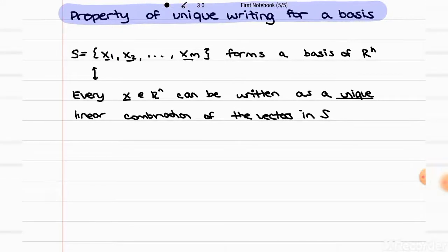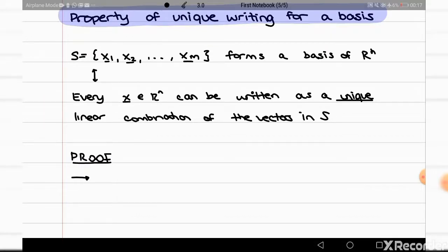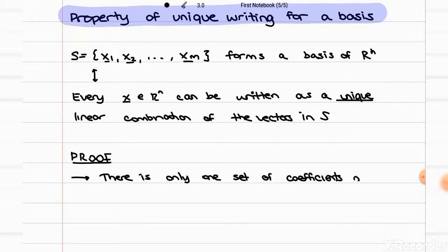For the proof, we have to prove it in both directions. First, we're trying to prove specifically that if we have a set of vectors, there's only going to be one unique set of coefficients that make x a linear combination of those vectors. There is only one set of coefficients, which we call alpha, or alpha i in general, to write x as a linear combination.